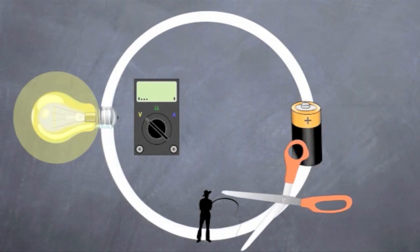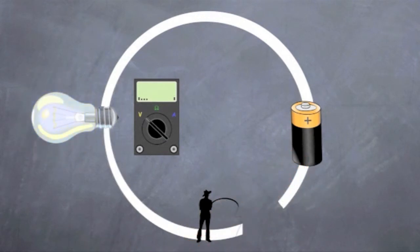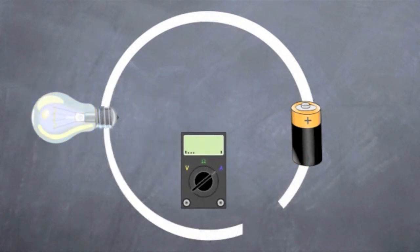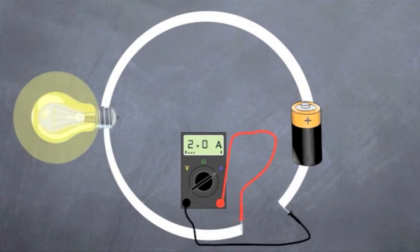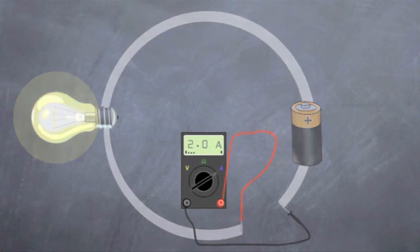If you want to see how many electrons go in the water, to measure the current, you need to cut the circuit, switch to amps, and insert your amp meter in the circuit. It measures 2 amps in our example.